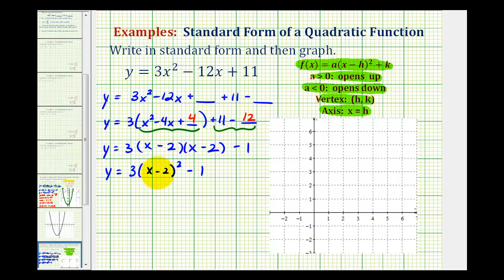And now in this form, we can recognize first that since a is equal to 3, the parabola opens up. We can also identify the coordinates of the vertex, but you need to be careful about the signs of the coordinates. Here we have the quantity x minus 2 squared, so the x-coordinate is positive 2. And then we have minus 1 here on the end, so the y-coordinate is negative 1. And if this is our vertex, we know the equation of the axis must be x equals 2.